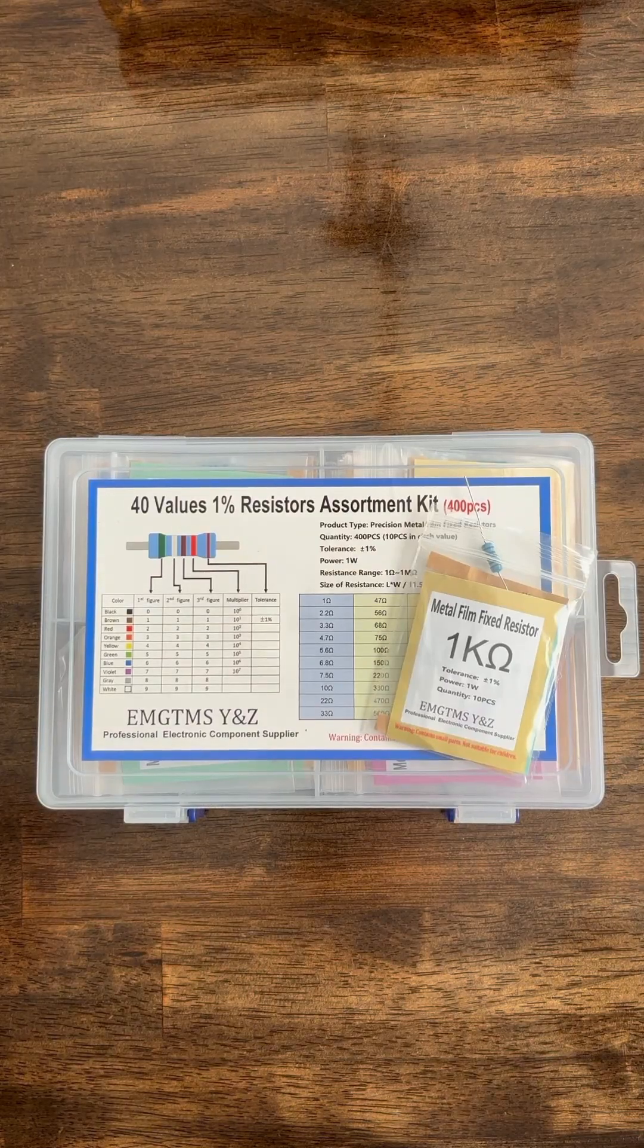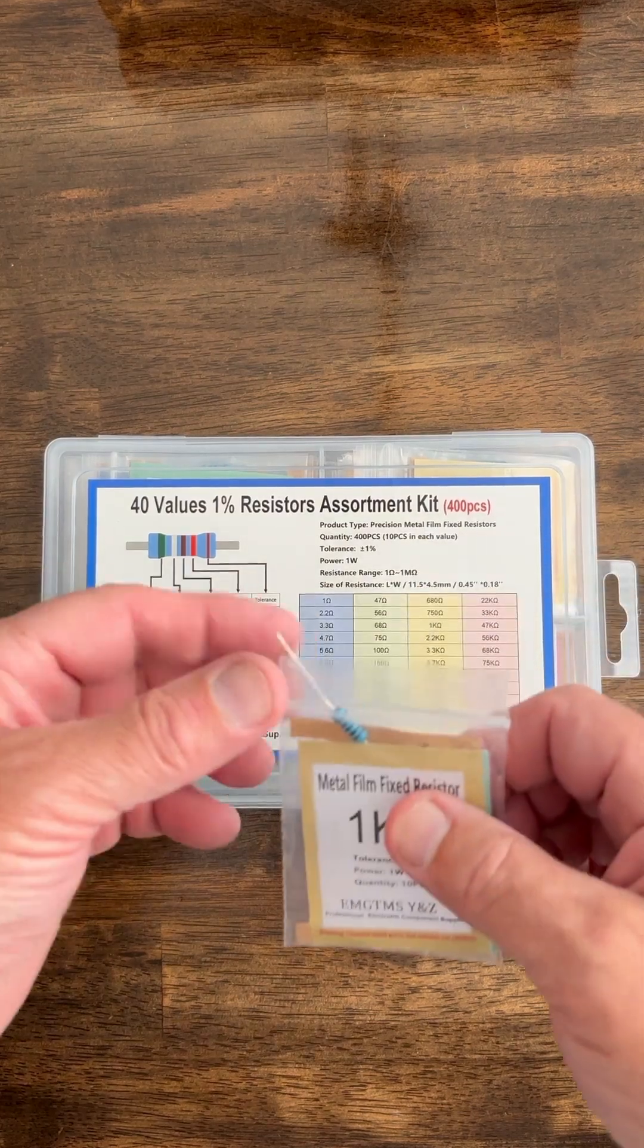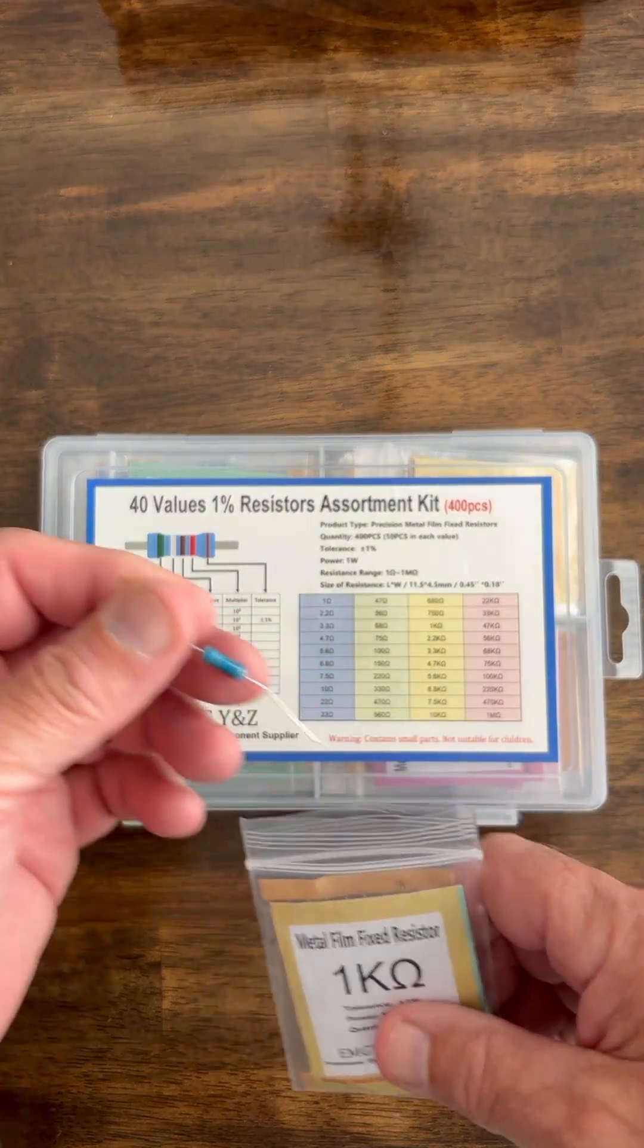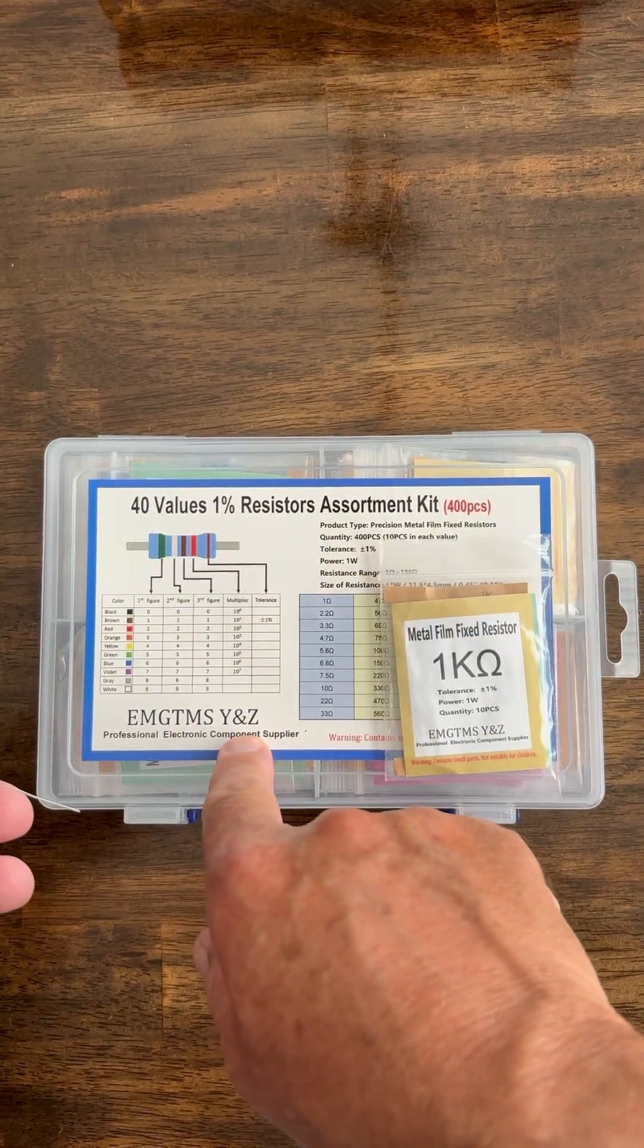Welcome to my video on measuring the resistance of a resistor with a multimeter. What I've got here is a 1k ohm resistor that came out of this box of resistors.